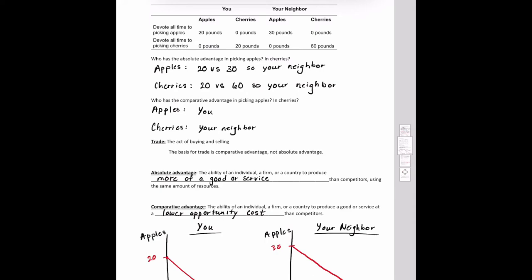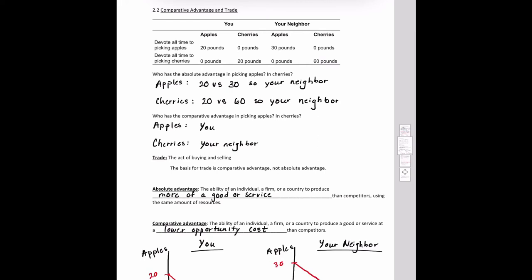Our next section is comparative advantage and trade. Comparative advantage is the ability of a firm, individual, or country to produce a good or service at a lower opportunity cost than competitors. While absolute advantage is the ability of an individual, firm, or country to produce more of a good or service than competitors using the same amount of resources. So absolute advantage is just more output, while comparative advantage is producing at a lower opportunity cost.